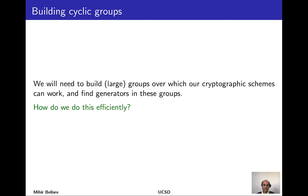Our study of number theory has discovered two classes of computational problems: easy and hard. Easy problems are ones for which we have fast efficient algorithms—things like modular exponentiation, modular inverse, extended GCD, and basic operations like addition, multiplication, and division. Hard problems include discrete logarithm and computational Diffie-Hellman. We want cryptography where scheme algorithms use the easy problems but the adversary is faced with solving the hard problems.